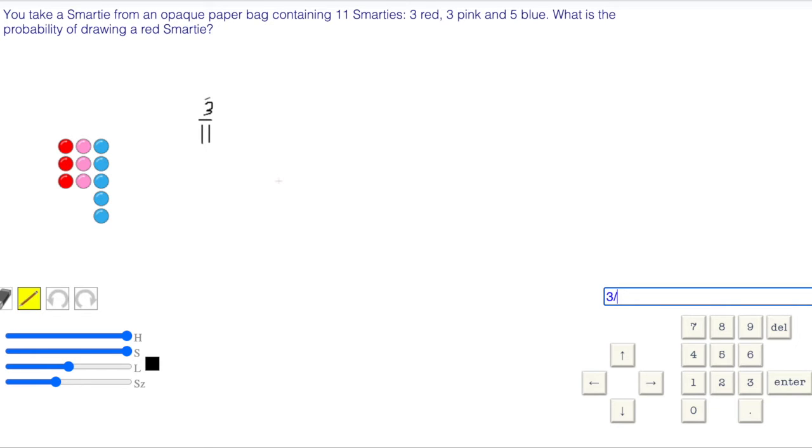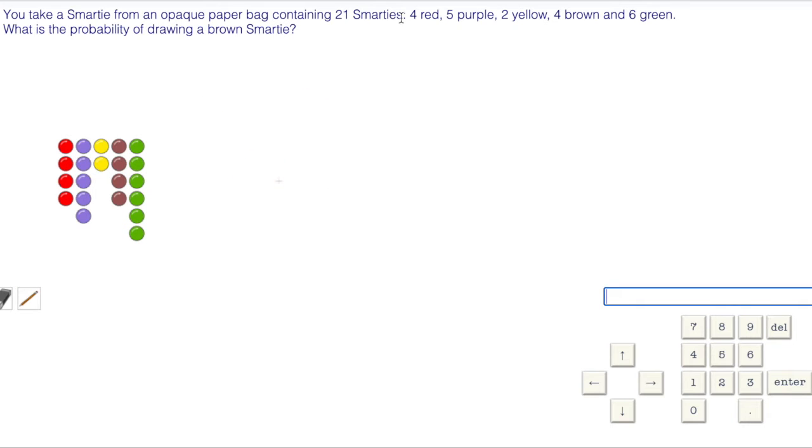Three out of eleven, and enter. Yay! One more. What's the probability of drawing a brown smartie? We have four browns out of 21 smarties in all. Four out of 21.